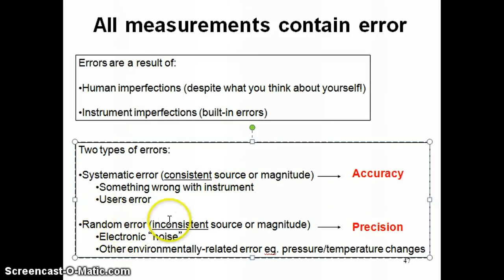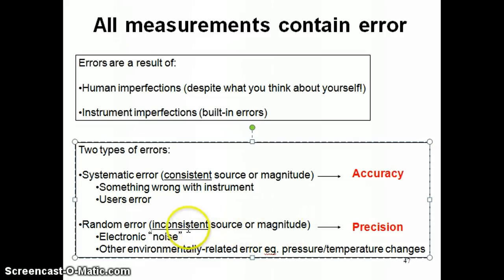A random error is a lot harder to detect because, by definition, it doesn't have a consistent source or magnitude — in other words, it's inconsistent. So that electronic noise I was talking about earlier, in terms of a signal transmitted through wires via electricity, you always have this error, and that error doesn't have a consistent magnitude every time.